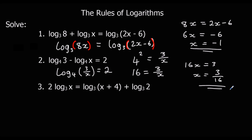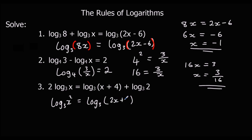For the third example, there's a 2 in front of the log, so we jump it up as a power to get log base 3 of x squared. Then on the right side, log base 3 of (x plus 4) plus log base 3 of 2 means we multiply the answers, giving log base 3 of 2(x plus 4), which equals log base 3 of (2x plus 8).